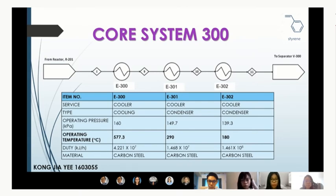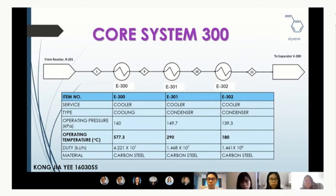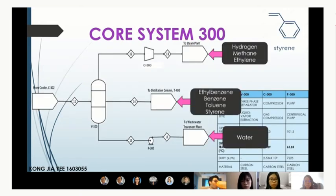I am Jiayi and I will continue for the process flow. In core system 300, the stream coming out from the second reactor at high temperature is directed through several stages of cooling. Coolers reduce the stream from 577.3 degrees Celsius to 65 degrees Celsius before entering the three-phase separator, with pressure drops of about 1.5 psi (10.34 kPa) across each cooler. After cooling, the stream enters the three-phase separator at 65 degrees Celsius and 129 kPa. The top outlet is the vapour phase containing hydrogen, methane, and ethane.